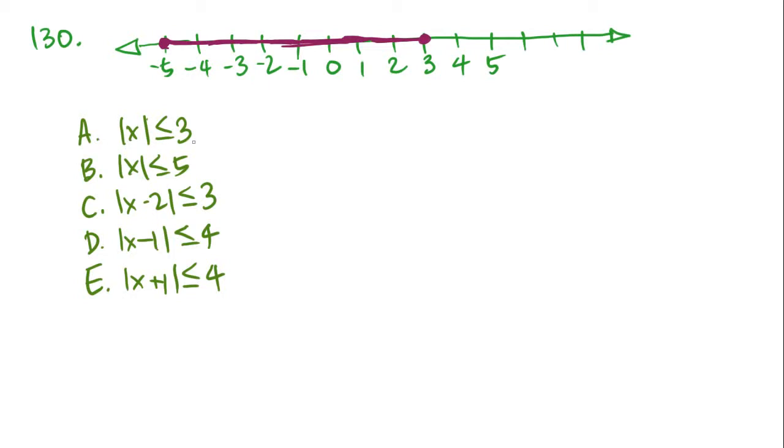So when you're simplifying it, you have to remember that anything that's inside the absolute value, you have to have both a positive and negative version of that. So that's what this question is really testing you. If you know that principle, then you can basically go through each of the answer choices and match them up to what is on that number line above.